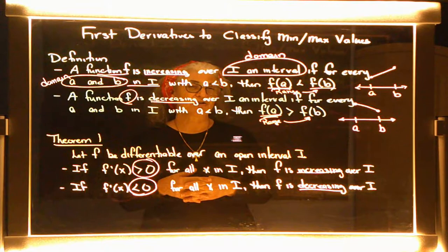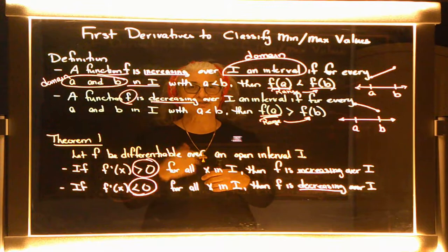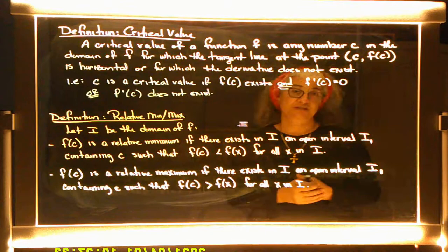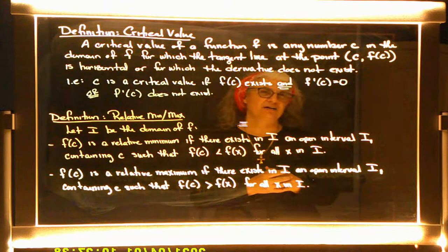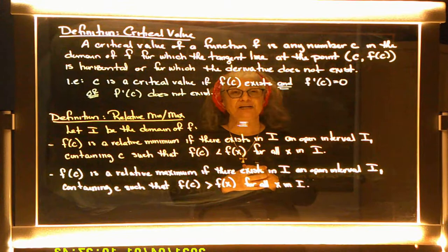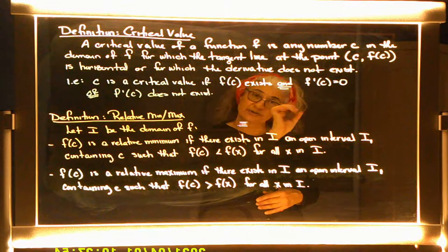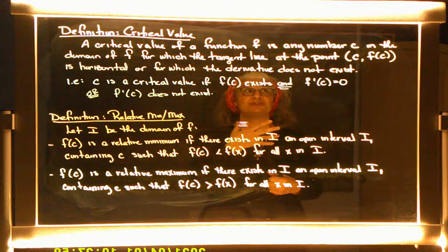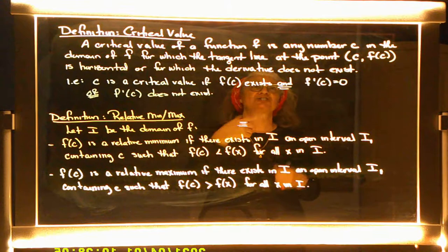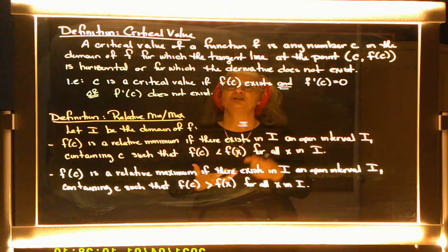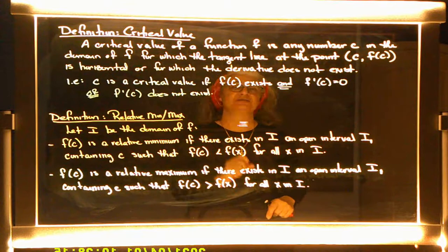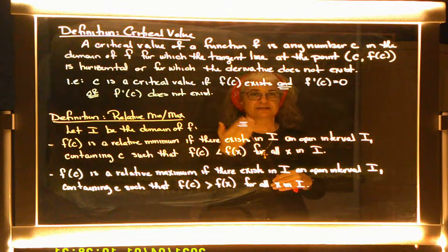We have a couple more definitions and theorems before we get into practicality, so stay tuned. Let's look at the definition of a critical value. Think of a critical value as a turning point — where a graph is increasing and suddenly hits the critical value and starts decreasing, or vice versa. The definition: a critical value of a function f is any number c in the domain of f for which the tangent line at that point is horizontal, or for which the derivative does not exist.